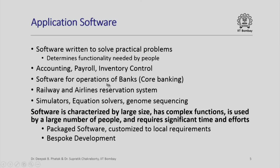Larger software, such as software for operations of banks — often called core banking software — or software required to handle railway and airline reservation systems. For computational purposes there are specialty software such as simulators, equation solvers, and genome sequencing in life sciences. All these applications could become very large and very complex. Application software in general is characterized by large size, complex functions, usage by large numbers of people, and requires significant time and effort.